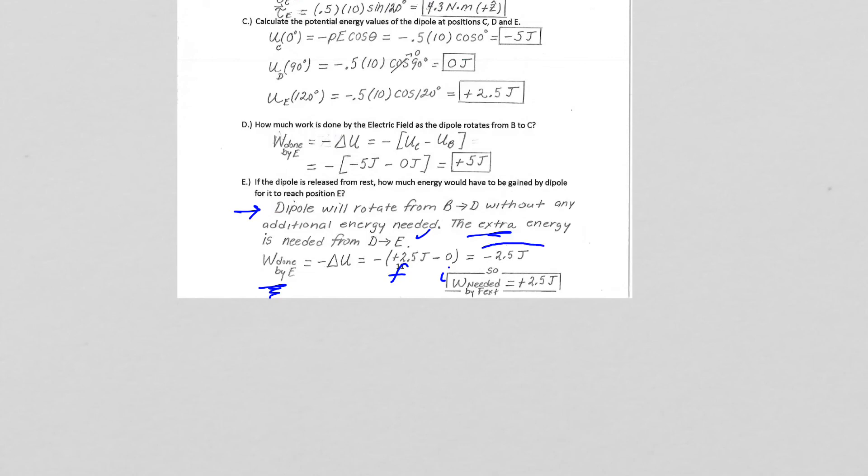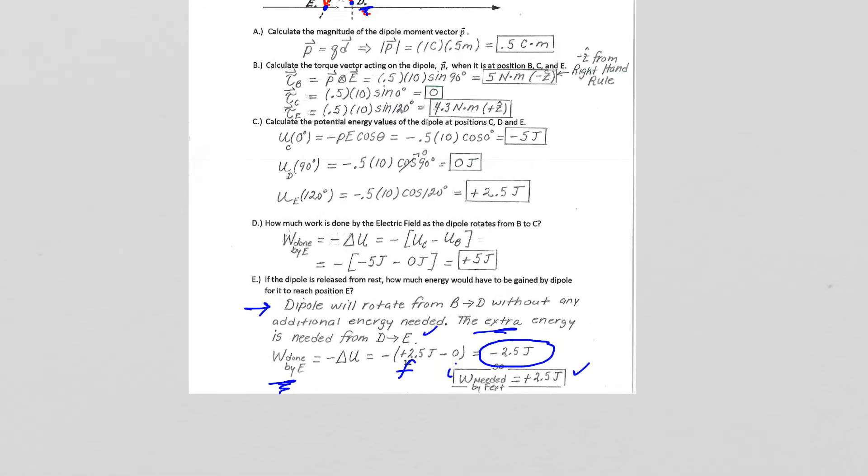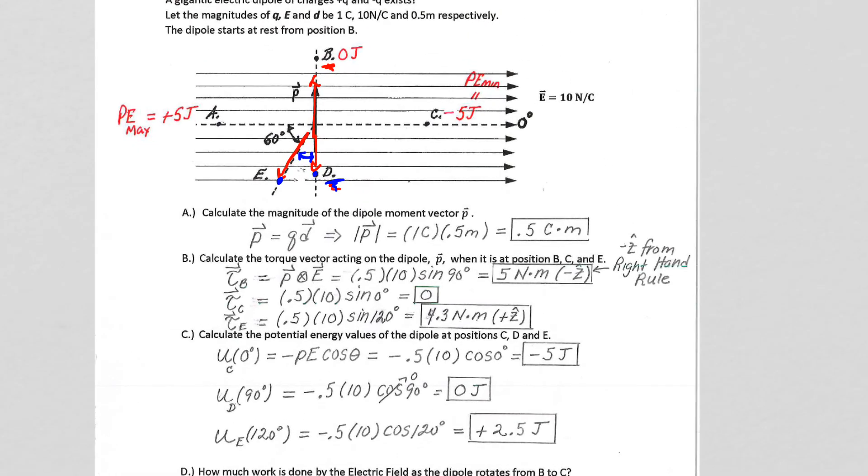So the work done by the field is going to be negative the change in potential energy. So now the work done by the field is negative. And that should make sense because if I were to flick the dipole from D to E, I would need to flick it with a positive 2.5 joules of energy. So you would need to flick it this way with 2.5 joules of energy, kinetic energy.